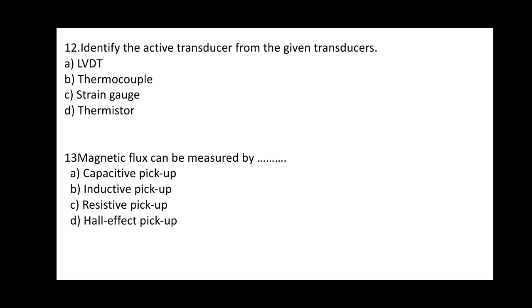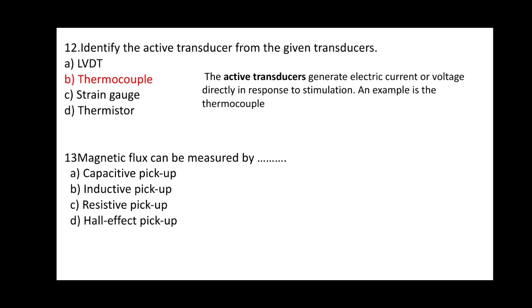Question 12: Identify the active transducer from the given transducers. Options: A) LVDT, B) Thermocouple, C) Strain gauge, D) Thermistor. The correct option is B — the thermocouple is the active transducer. An active transducer generates electric current or voltage directly in response to stimulation. The thermocouple is a classic example of an active transducer.